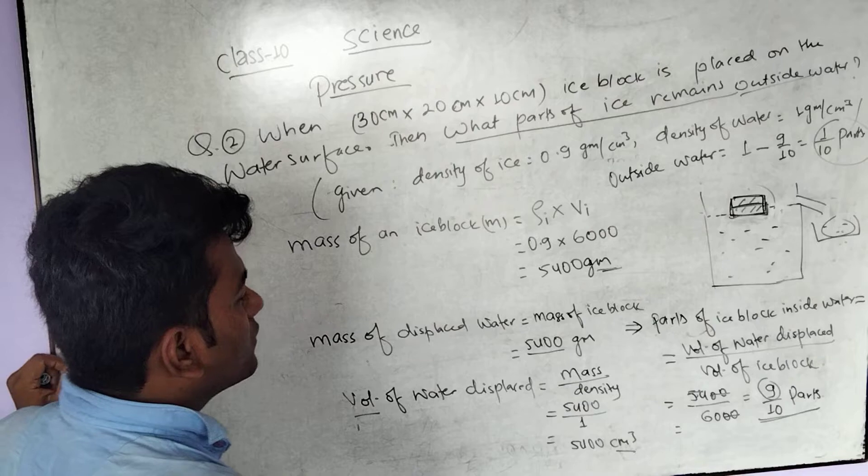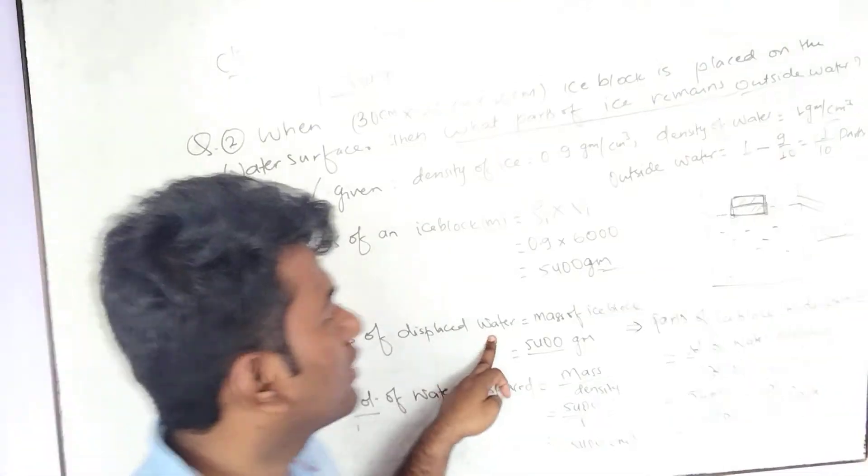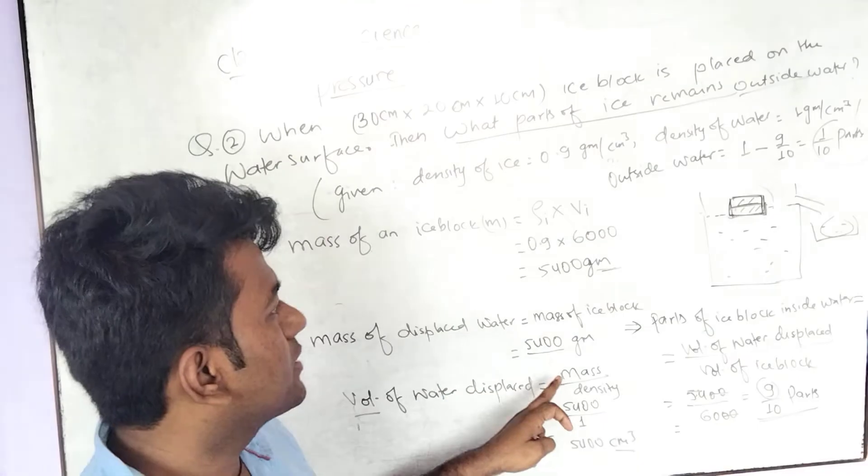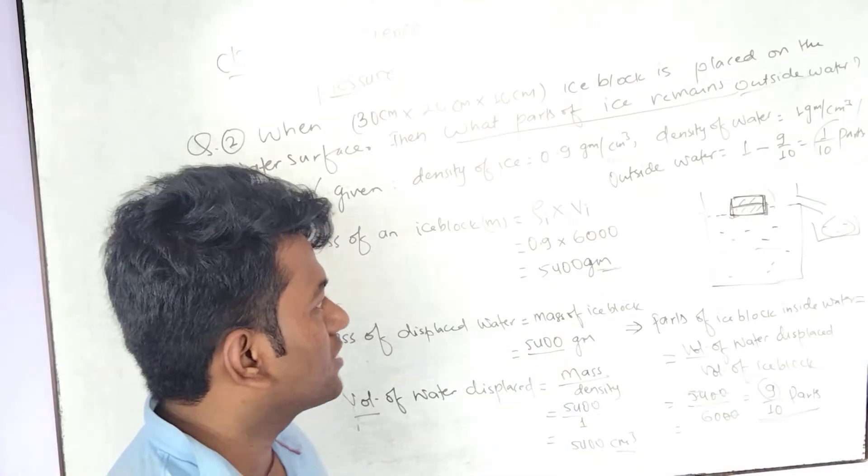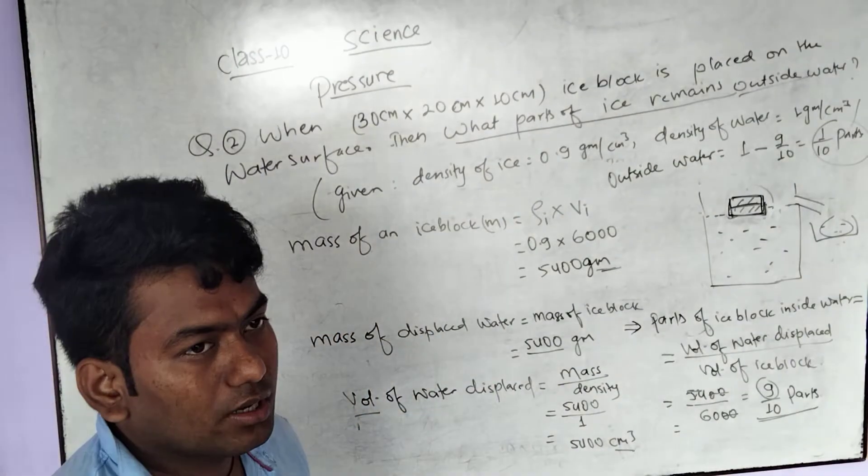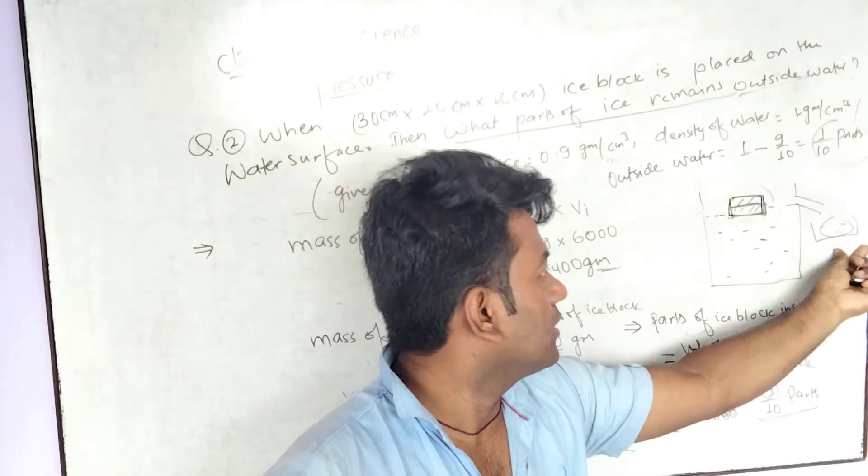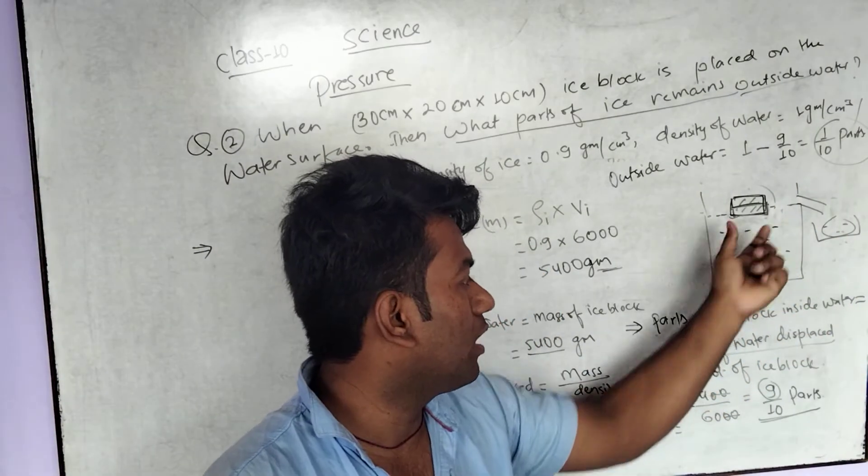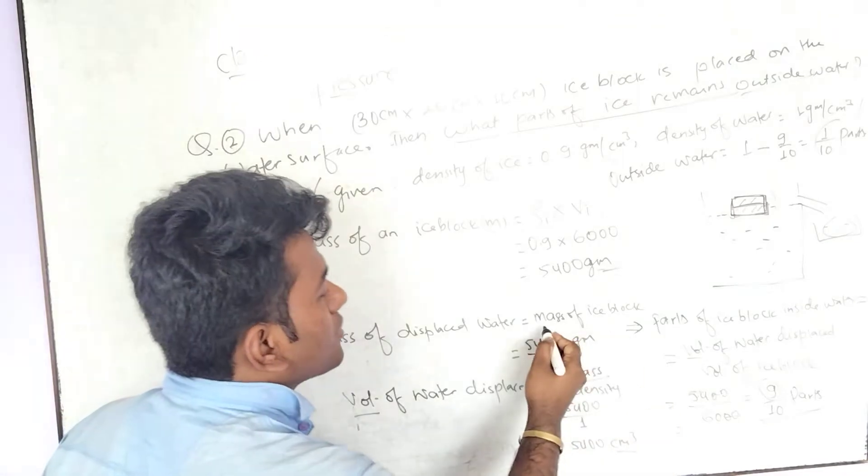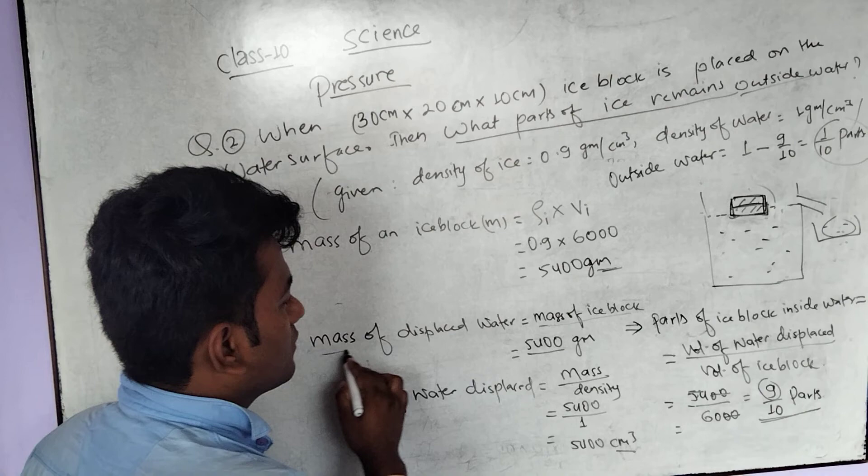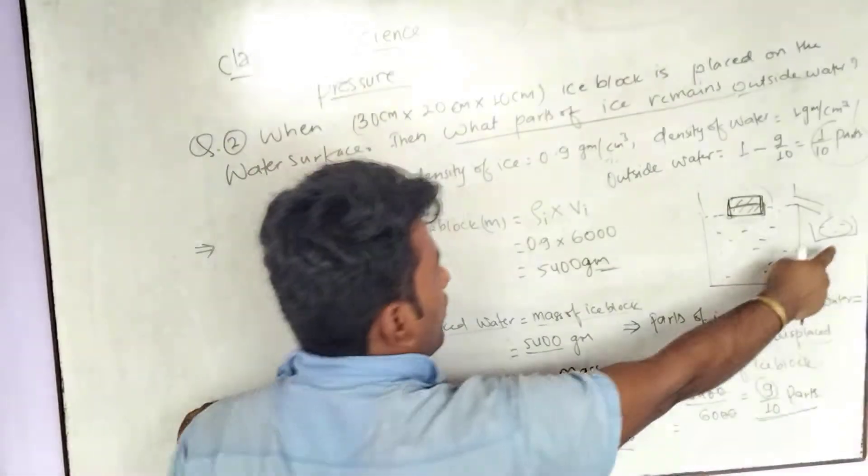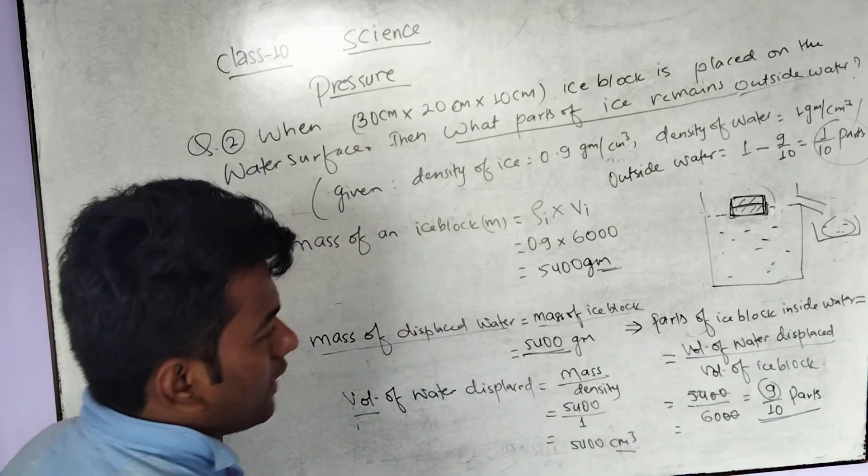We need to know the mass of displaced water. We can find this from the law of flotation. If any object is floating on the liquid surface, the mass of the liquid displaced by it is always equal to the mass of the floating object. So mass of ice block equals mass of water displaced, which is 5400 grams.